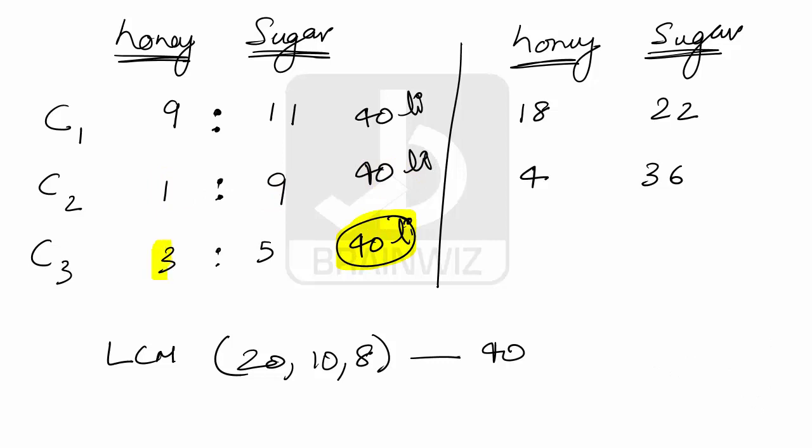Now same fashion, this 40 liters is 3 parts and 5 parts. Overall, 8 parts makes 40 liters, 1 part makes 5 liters. Same fashion, 3 parts make 15 liters and 5 parts make 25 liters.